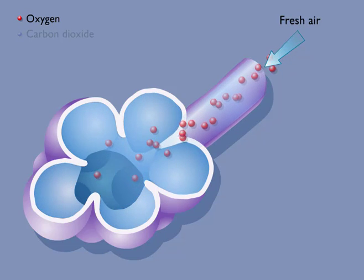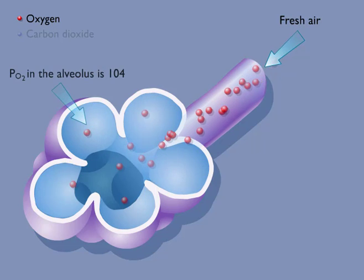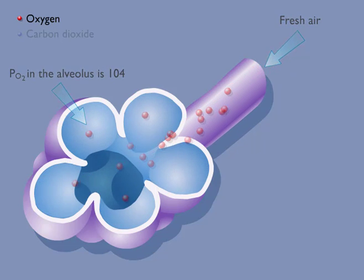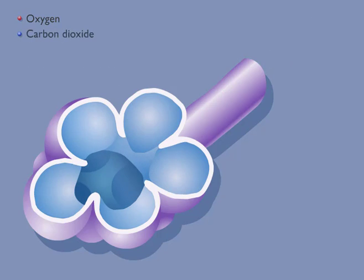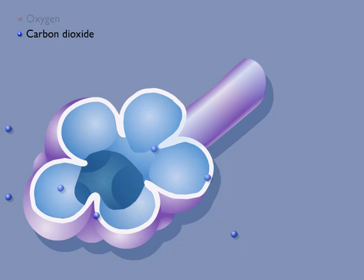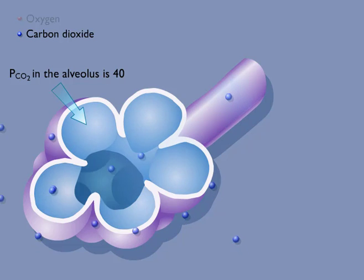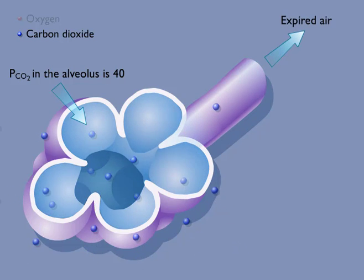The partial pressure of oxygen in the air within the alveoli is 104 millimeters of mercury. Carbon dioxide that enters the alveoli from the blood causes the carbon dioxide concentration in the air of the alveoli to be 40 millimeters of mercury. Carbon dioxide is continually removed from the alveoli as air is expired.